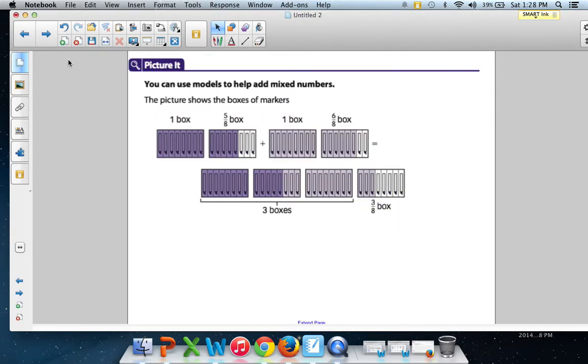You can use models to help add mixed numbers. The picture shows the boxes of markers. There's one box and 5 eighths box plus one box and 6 eighths box. Well what you do is you start adding all those pieces together. Notice how this is dark right here. These are the dark shades and these are like a light shade. And then down below they start putting pieces from the incomplete box in to the complete box. So three of these end up going inside of there. See how three of those light boxes got filled into the blank spot.